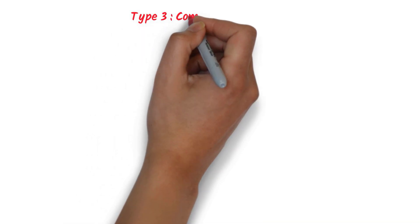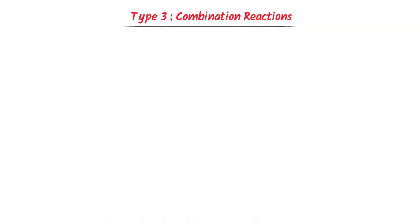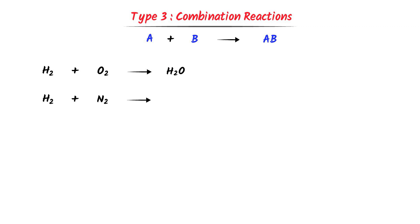The third type is combination reactions. The word combination reminds us that A plus B reactants combine together to form only one product. For example, hydrogen gas plus oxygen gas combine together to form water. Similarly, hydrogen gas plus nitrogen gas combine together and we get ammonia, NH₃.